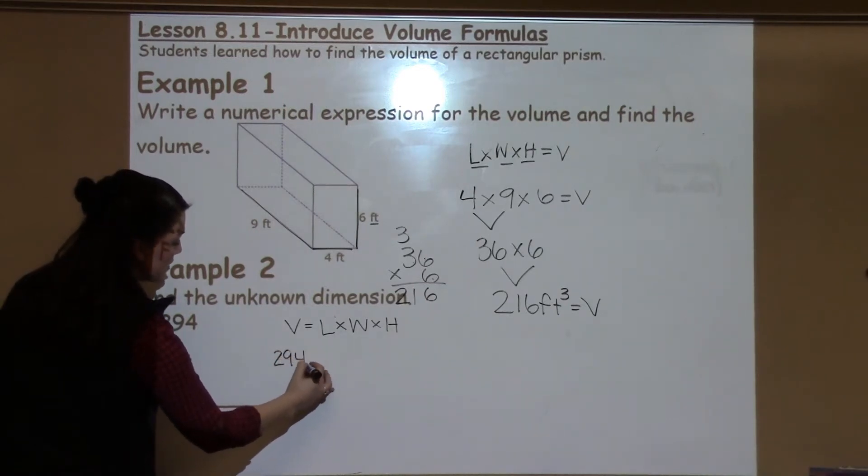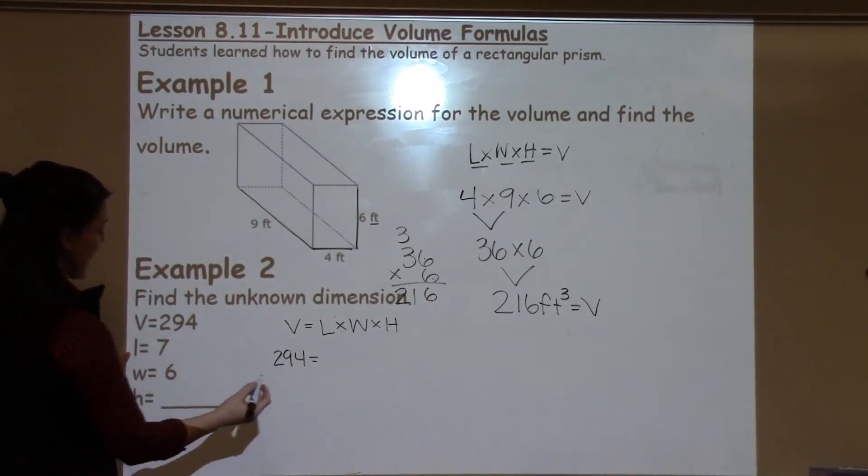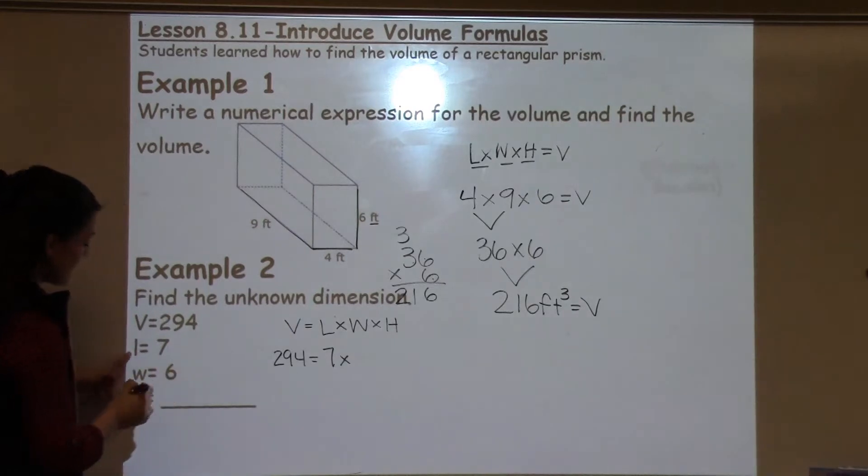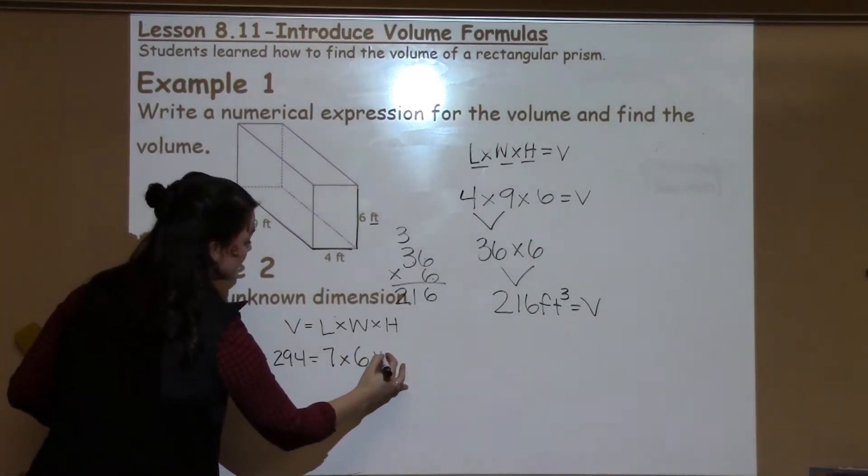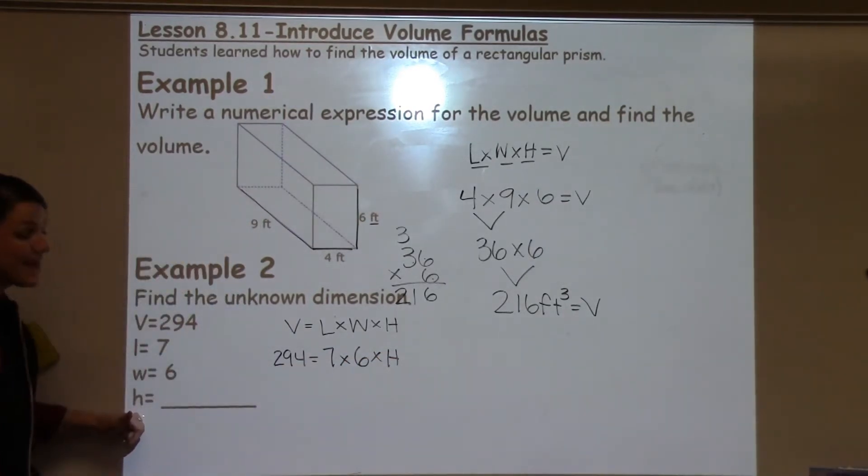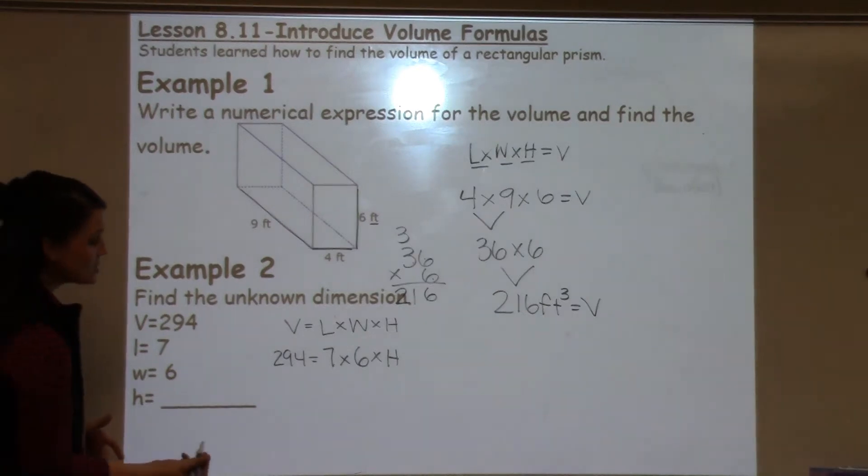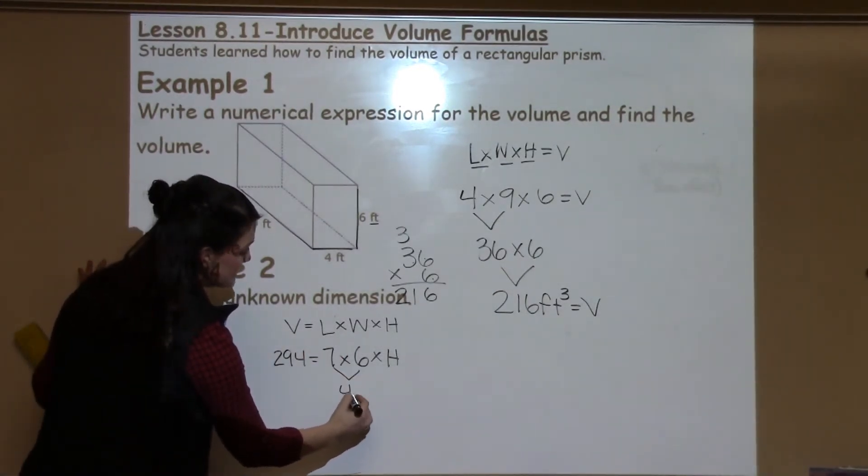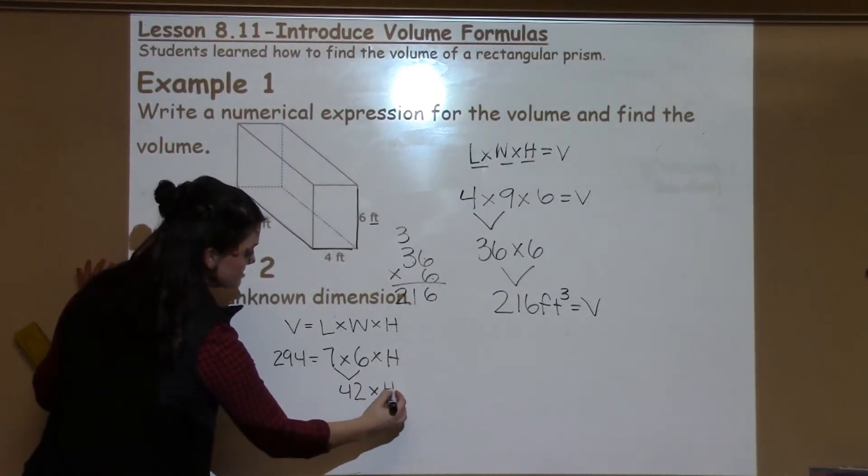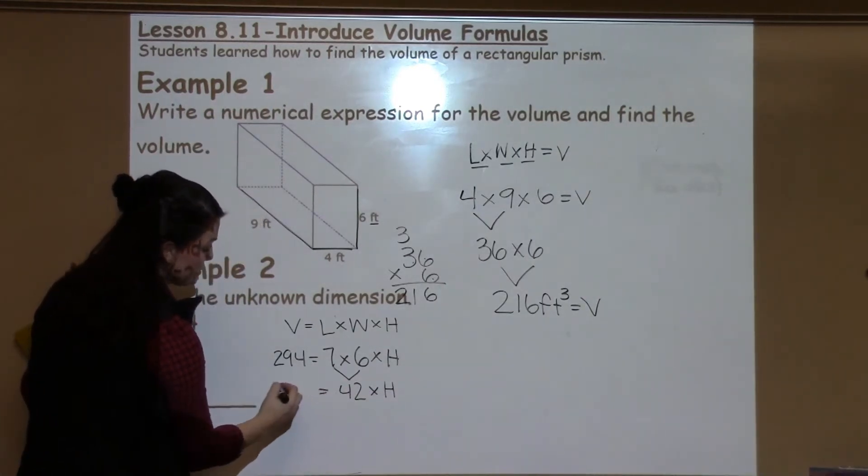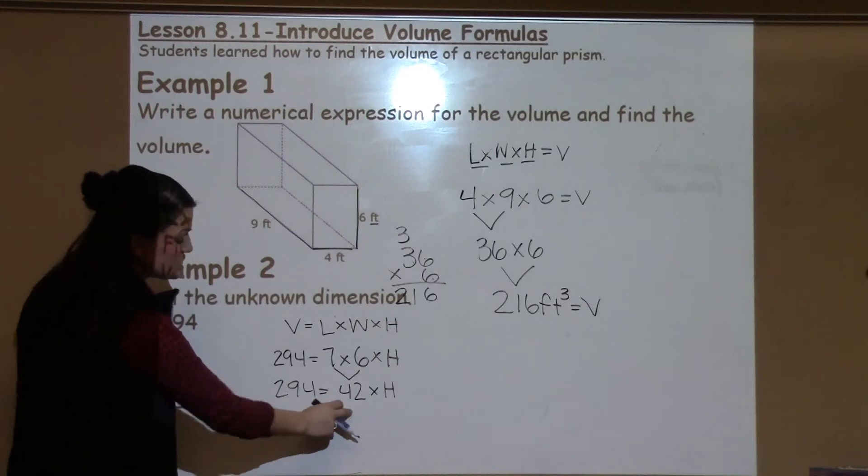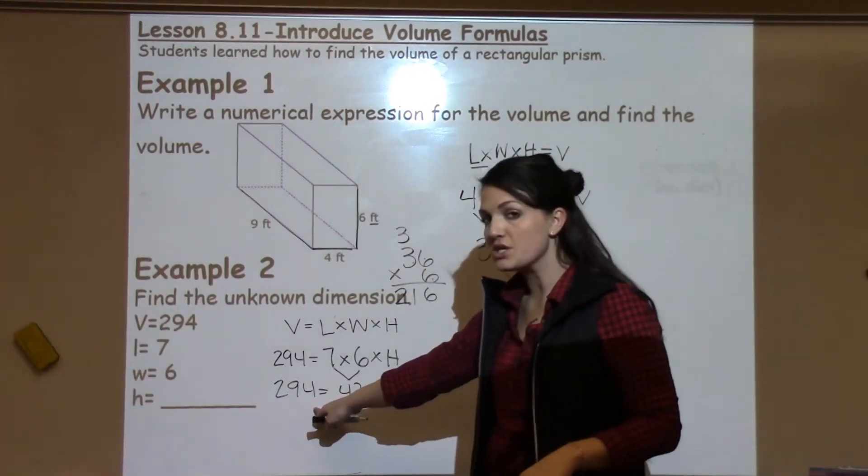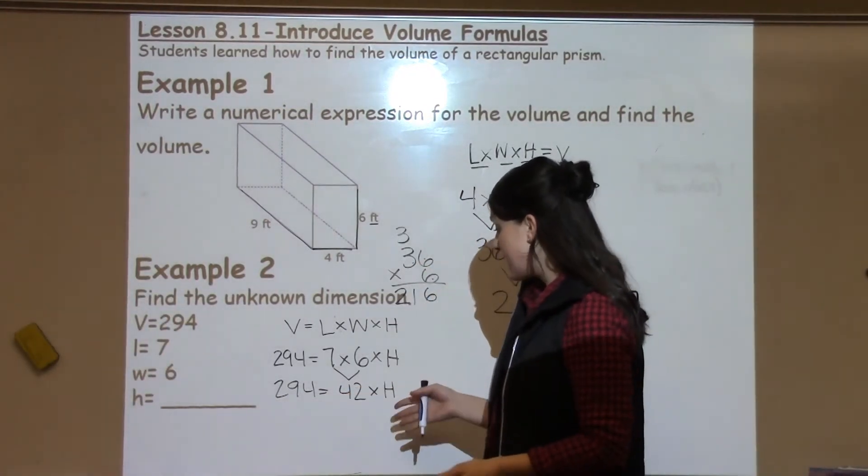So I have that the volume is 294. I have that the length is 7. I have that the width is 6. And I'm missing the height. So I'm just going to leave it as h. And now I'm going to solve with what I have. So 7 times 6 I know is 42. I still have 42 times h equals 294. So in order to solve this problem and find the missing height,